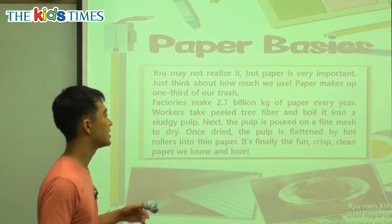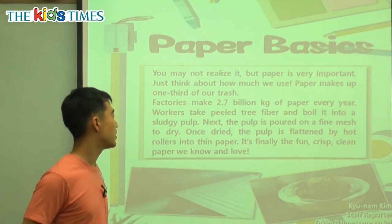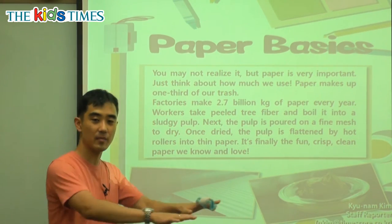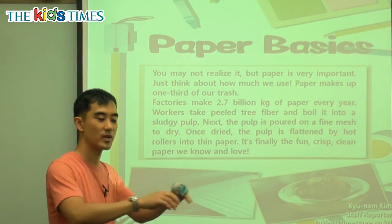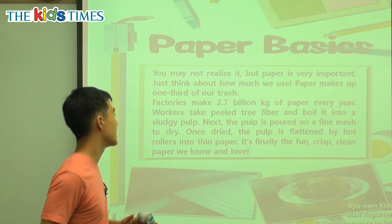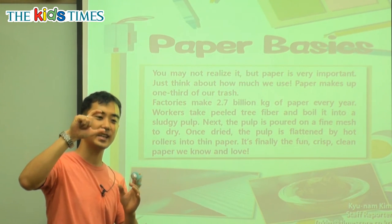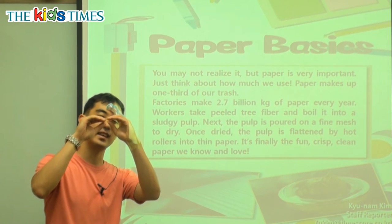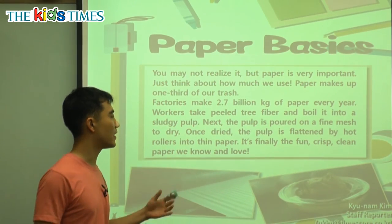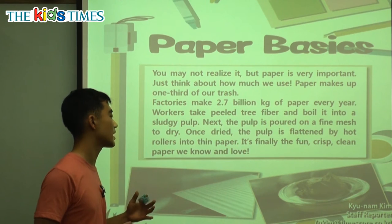Once dried, the pulp is flattened by hot rollers. Rollers are like when we make pizza — we roll it and it becomes very flat. So this makes it into thin paper. It's finally the fun, crisp, not flexible, clean paper that we know.